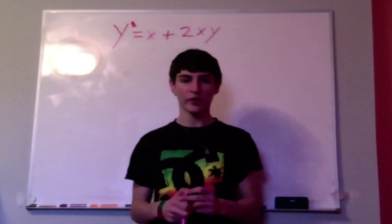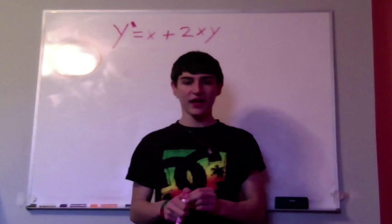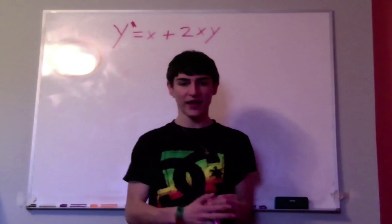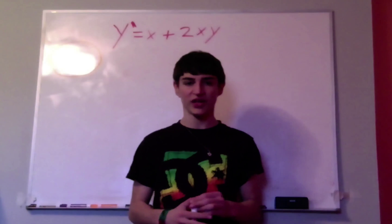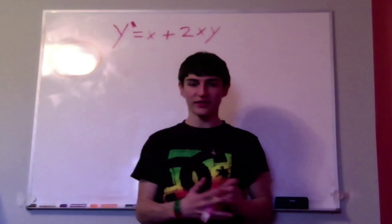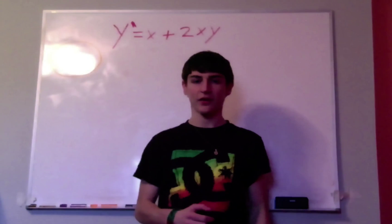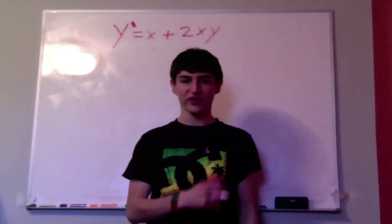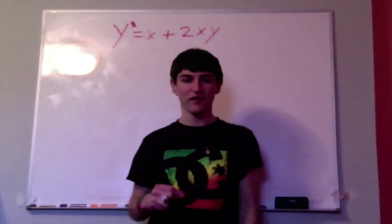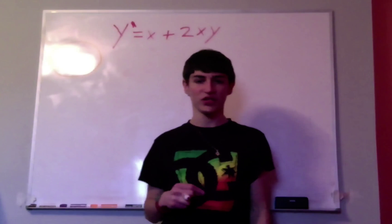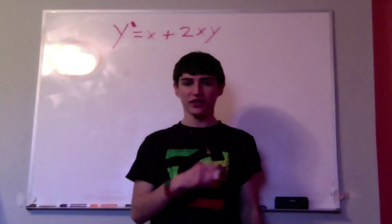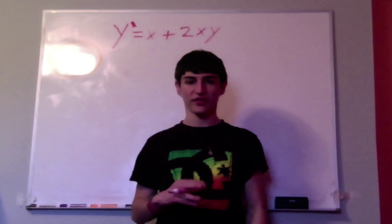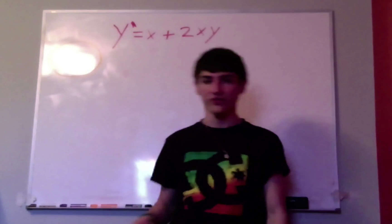Hey guys, this is MacKids101, and today I'm going to be showing you the second math video on this channel. In the last math video, I proved Euler's identity by solving a differential equation. In that differential equation, I solved it by using a method called separation of variables.